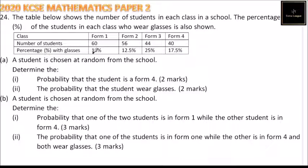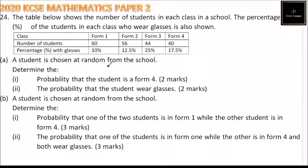The percentage of students in each class who wear glasses is also given. 10% of those in Form 1 wear glasses, 12.5% in Form 2, 25% in Form 3, and 17.5% in Form 4. A student is chosen at random from the school.